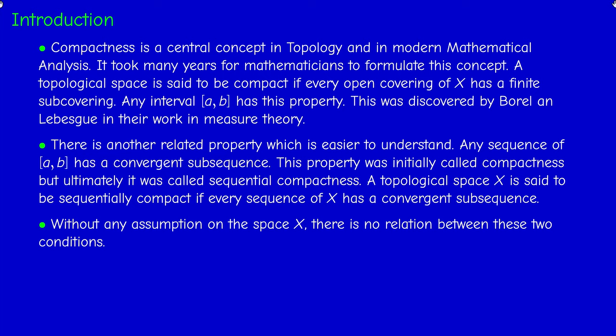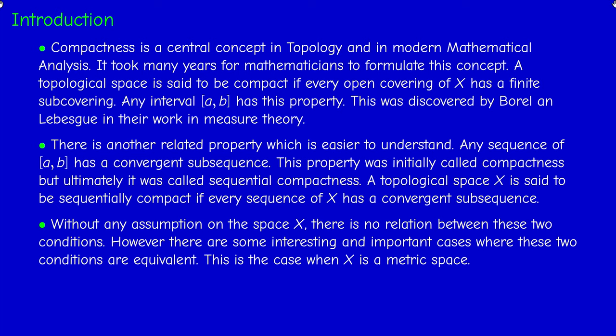Not all spaces are compact, and not all spaces are sequentially compact. When I say there is no relation between these two conditions, it means there exists a compact space which is not sequentially compact, and there exists a sequentially compact space which is not compact. However, there are some very important situations where these two properties are equivalent — this is the case for metric spaces, our basic object of study.